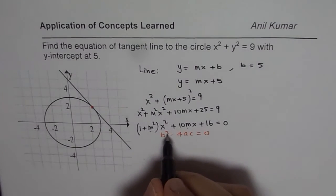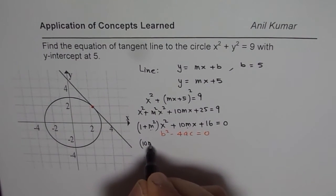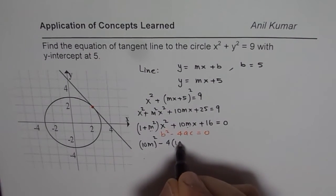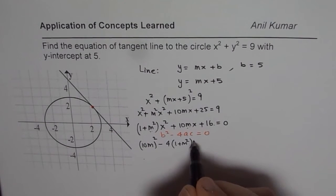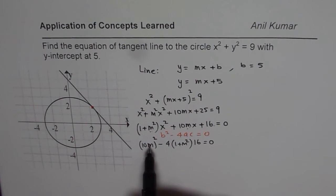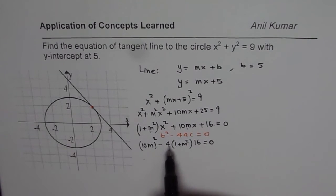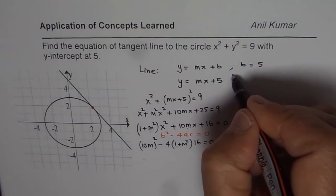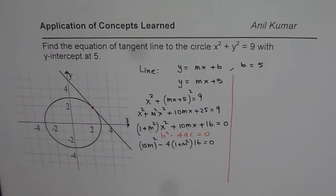So, we will use that. So, b square is 10m. So, we will write 10m square minus 4 times a is 1 plus m square and c is 16. That should be equal to 0. So, that is how you actually solve this particular equation. Now, you can actually open the brackets and then solve it or you could actually factor and then solve, because this is difference of squares. You could factor and then solve and find the value m. So, you can actually pause the video, find the solution from here onwards and then get your answer. So, let us continue.